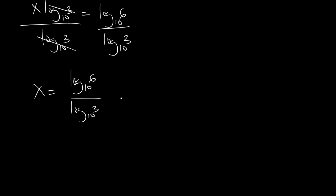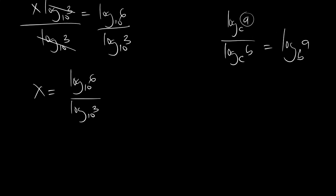This can also be written in another form using the change of base rule in logarithms. If you have log a base c divided by log b base c, that is the same thing as log a base b. So log 6 base 10 divided by log 3 base 10 is the same thing as log 6 base 3.